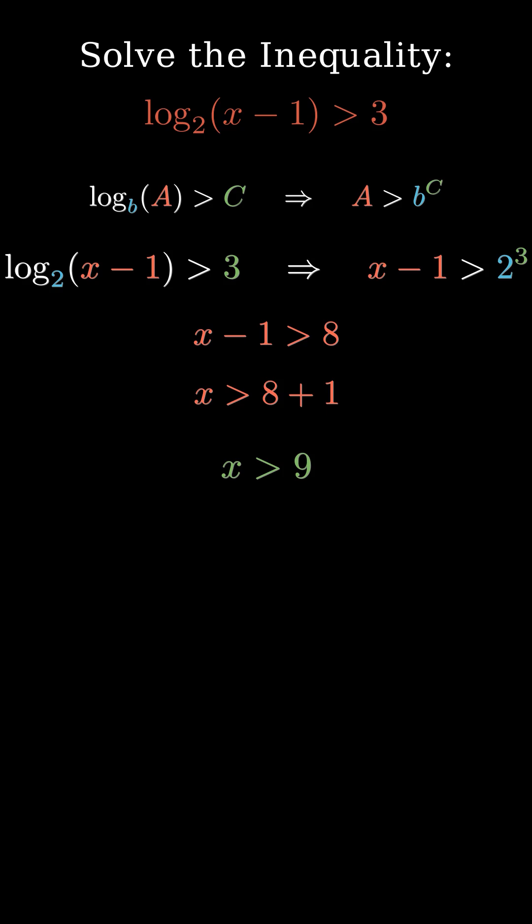So the solution is x greater than 9. But one more thing — the domain of the logarithm must be positive. Remember, the argument of a logarithm must always be positive. Since we have log base 2 of x minus 1, that means x minus 1 must be greater than 0, which gives us x greater than 1.